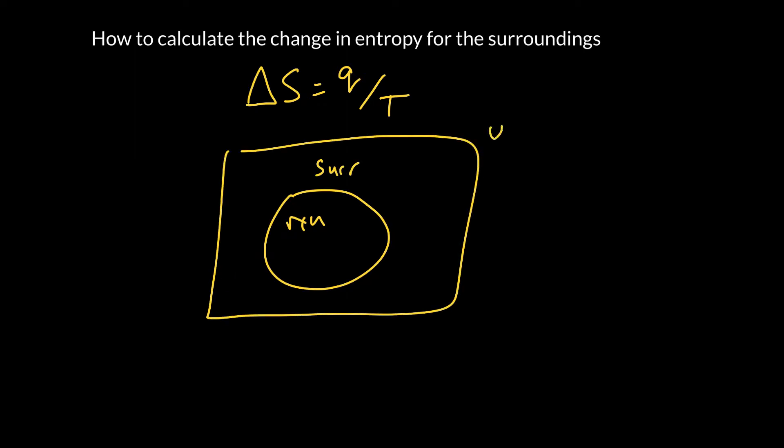We're going to start with the definition of entropy. So the change in entropy is going to be the heat that enters into the surroundings, divided by the temperature of the surroundings. We can draw ourselves a picture. This is our chemical reaction. This is our surroundings. This whole thing here is the entire whole universe.